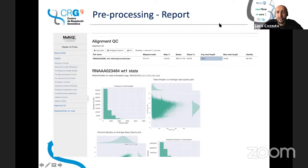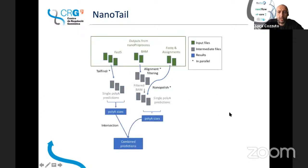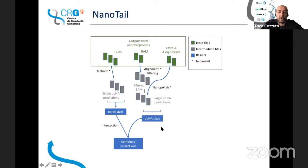The next module is called Nanotail. Nanotail works on top of the results from NanoporeProcess and allows you to estimate information about the size of the poly-A tail. Basically, you get the output from NanoporeProcess and without touching anything, you launch the pipeline and run two different tools: one is Tailfindr, the other is Nanopolish. They are parallelized, so they should be quite fast. At the end, you get these two predictions combined, plus their intersection — predictions called by two independent tools are a bit more reliable.